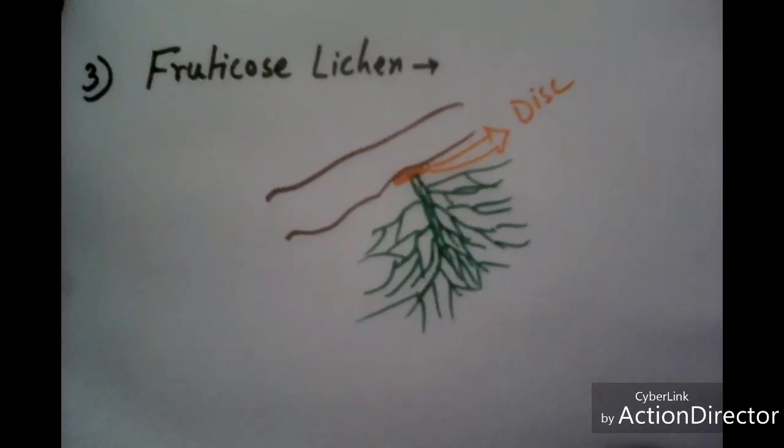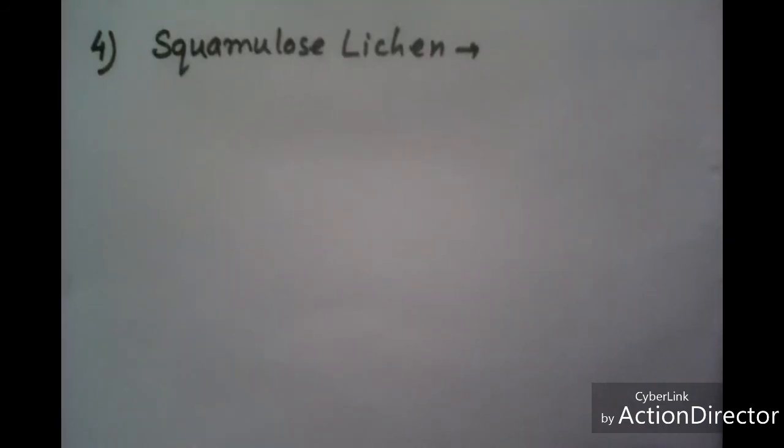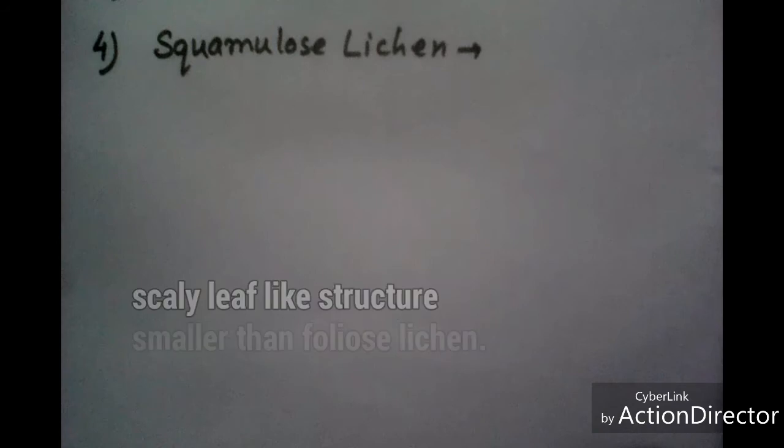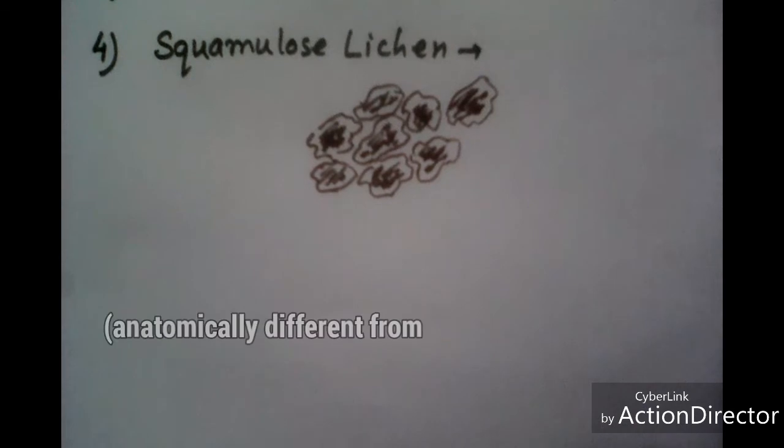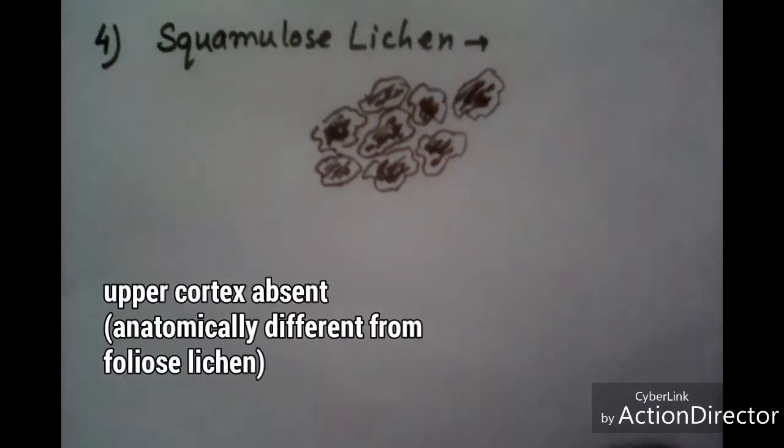Next type of thallus is squamulose lichen. It also shows a leafy-like structure, but their structure is smaller than foliose and they also contain scales. Lower cortex is absent in this type of lichen thallus.